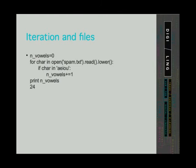Now that we know how to iterate through the contents of the file character by character, we can, for example, count the number of vowels in the file. First we reset the counter to 0. Then we say: for character in open('spam.txt'), then we call the read method and we call the lower method so that we don't miss the uppercase vowels. If the character is found in the string 'aeiou', we increase the counter by 1. When we print the counter, the program returns the value 24.